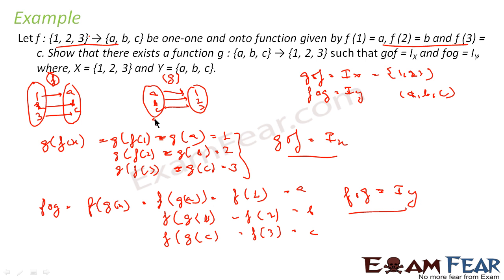In this question, the mapping for function f was given, but for function g only the domain and codomain were given. We proved that there exists a function g such that gof = I_X and fog = I_Y. The mapping chosen was g(a)=1, g(b)=2, g(c)=3 — any bijective mapping would work.